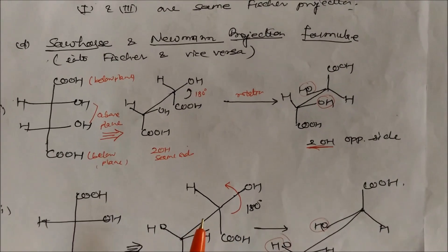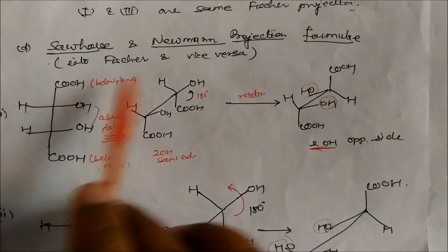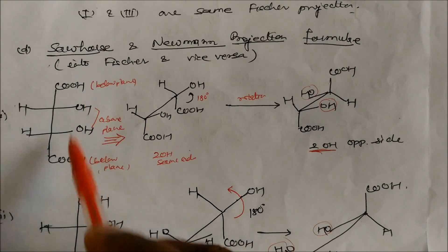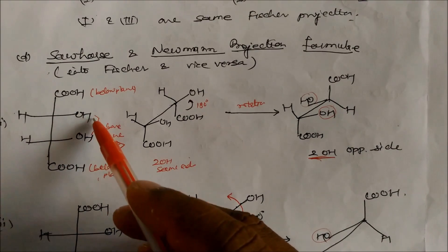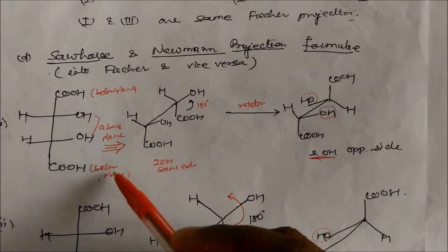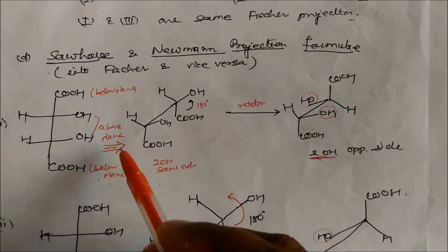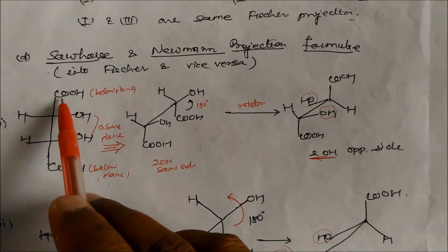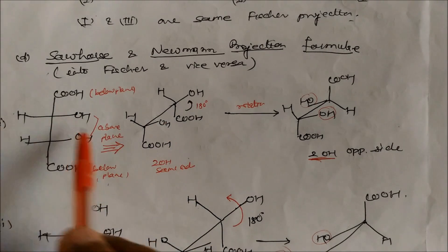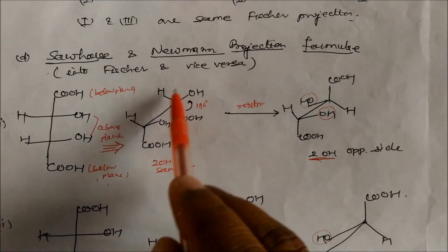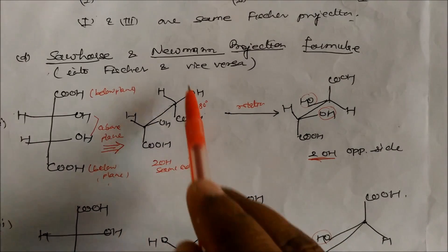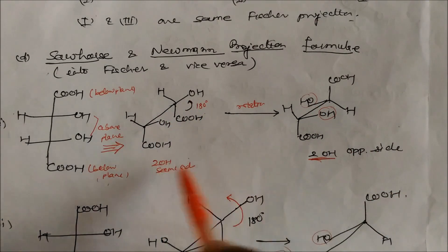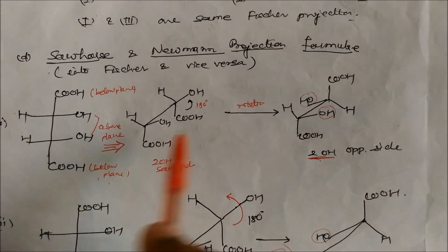Next is the Sawhorse and Newman projection formula. Starting from a Fischer projection, the two groups on the vertical line — such as COH — are written above and below the plane, while the horizontal groups are up. On rotating by 180°, the structure changes so that you have two OH groups in opposite sides, or in the same side depending on the original configuration. This is the conversion from Fischer to Sawhorse projection.